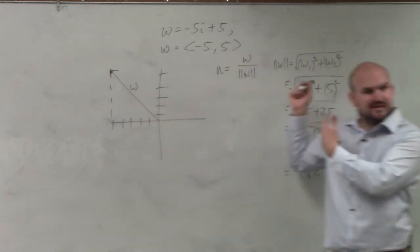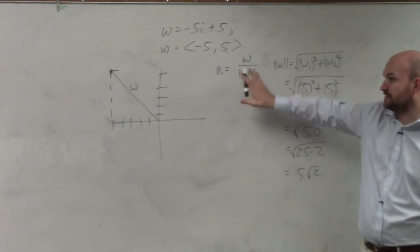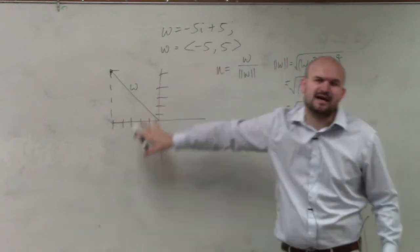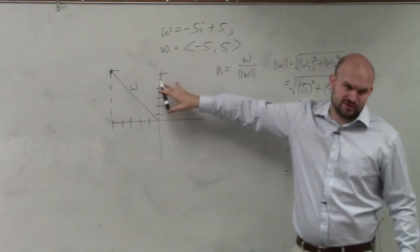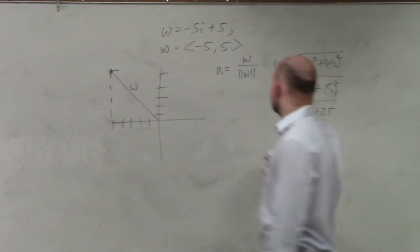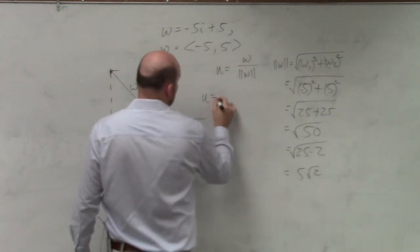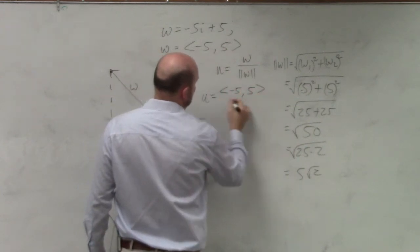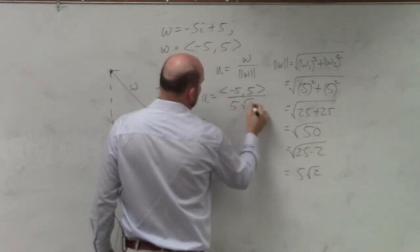That's basically just what I did with this formula. But you guys will want to know this for a minute because not always are you going to want to spend the time to graph it so you can get that visual reminder. So our magnitude is 5 square root of 2. So u equals our vector, negative 5 comma 5, divided by 5 square root of 2.